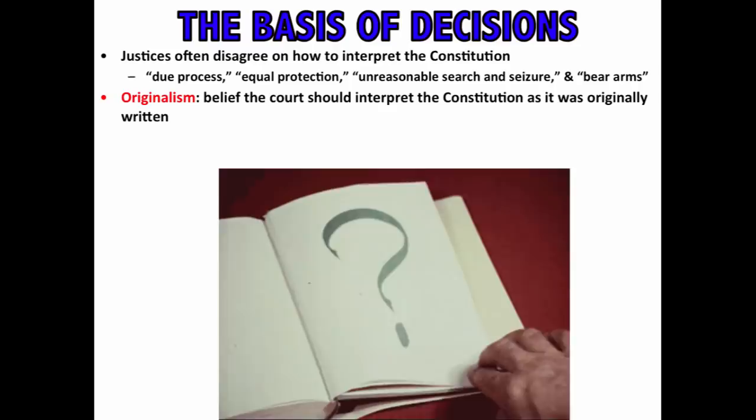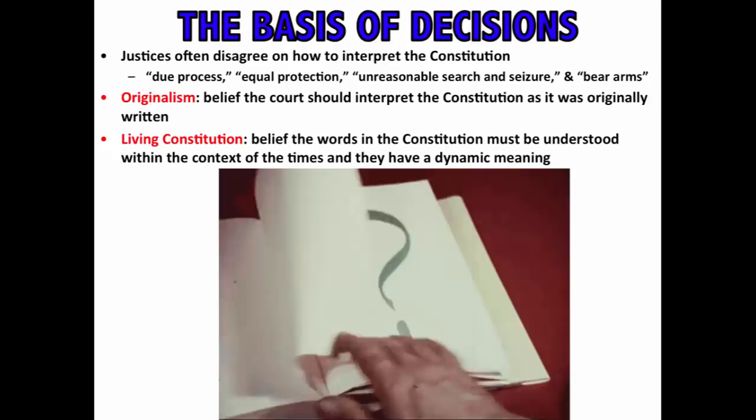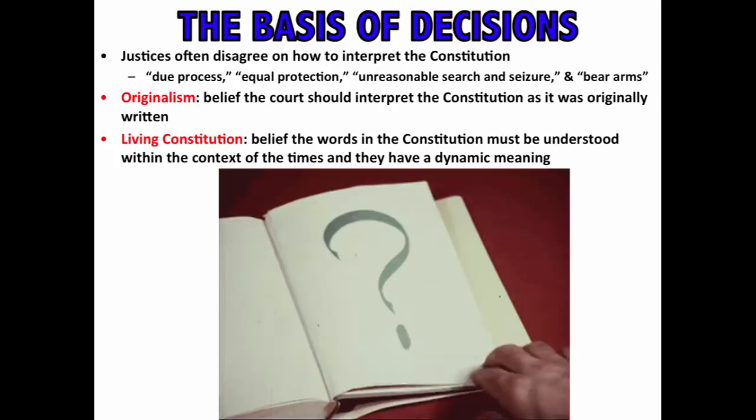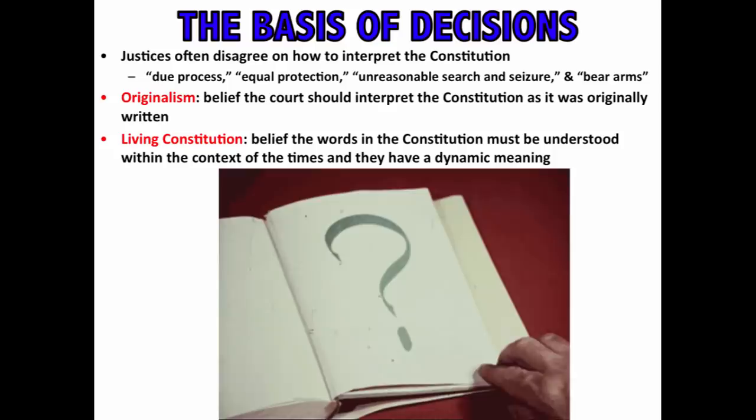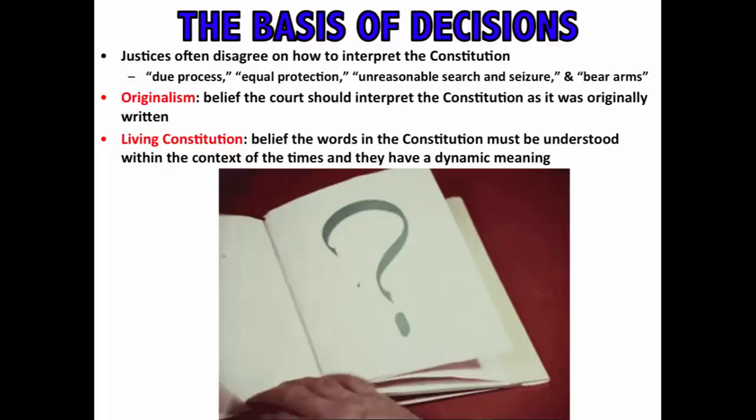An opposite view is known as the living Constitution view — the belief that the words in the Constitution must be understood within the context of the times and have a dynamic meaning. We must reinterpret the Constitution as times change. The world is very different than it was in the 1780s and 1790s: we have political parties not mentioned in the Constitution, social media platforms, and weapons that can kill a large number of people in less than 30 seconds. This view says we must interpret the Constitution using our own modern context.